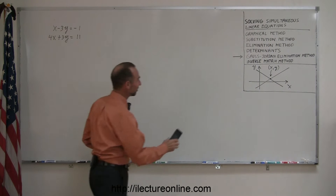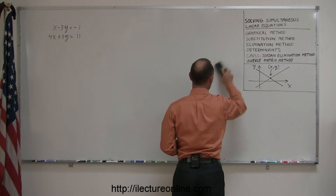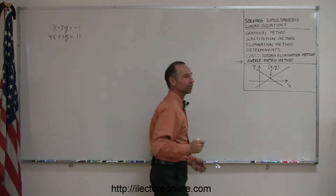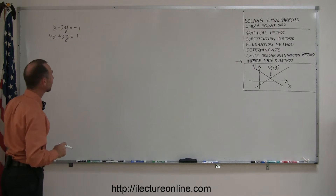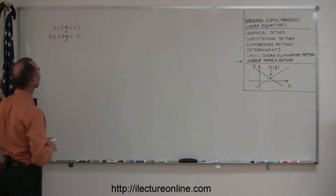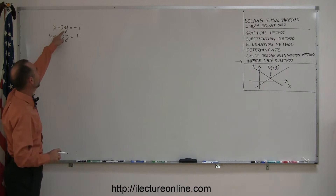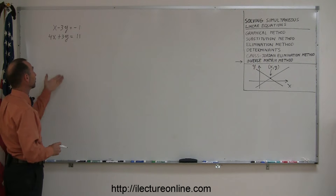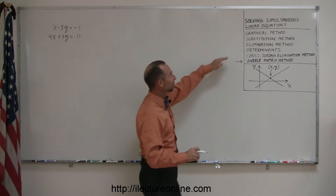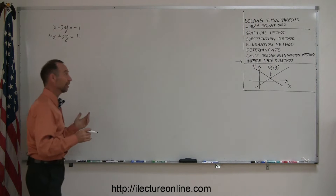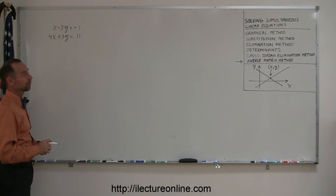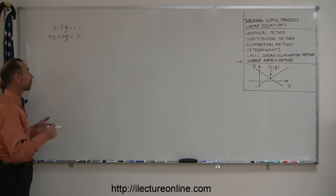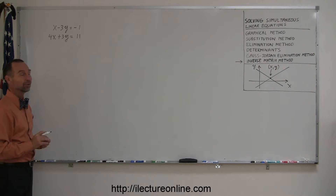Now let's go ahead and tackle our last method of how to solve linear equations simultaneously. We're going to use the inverse matrix method. You may say, why do you want to do that? If you take a look at this equation, right away you can see that you have a minus 3y in the first and a plus 3y in the second, and that would definitely lead itself to simply adding two equations, eliminating y. So the elimination method for this particular example is by far the best method to use. However, there are some very good reasons why sometimes we want to use the inverse matrix method, so let's go ahead and take this example and apply it to that particular method.